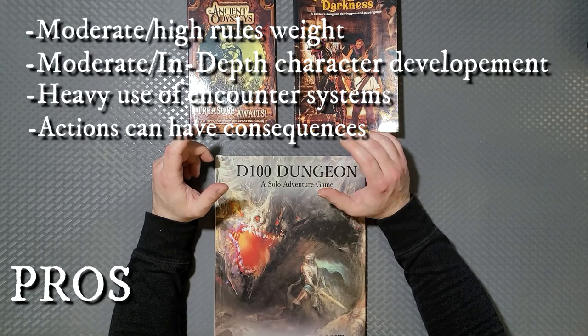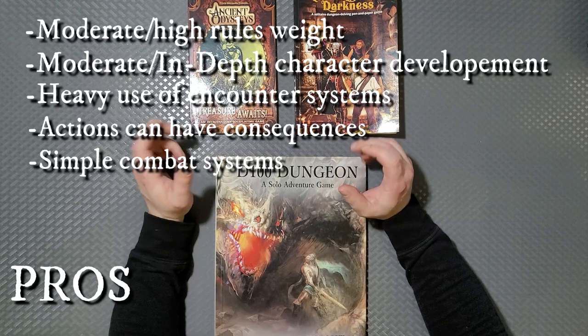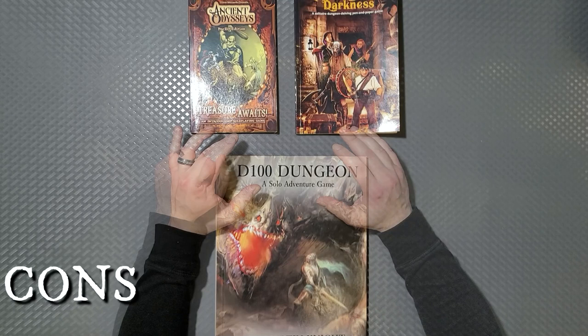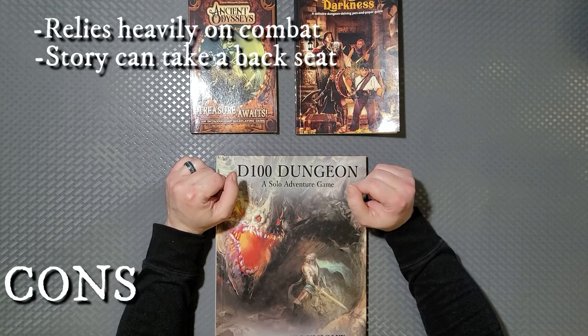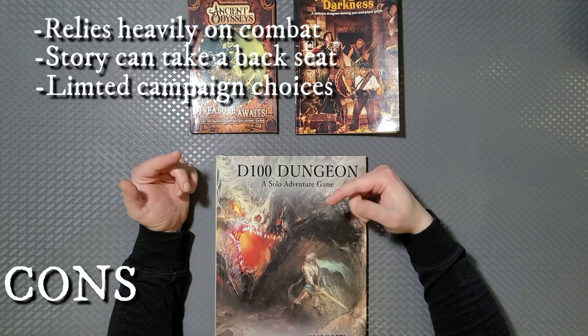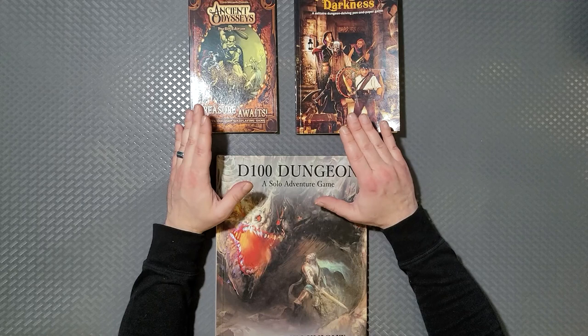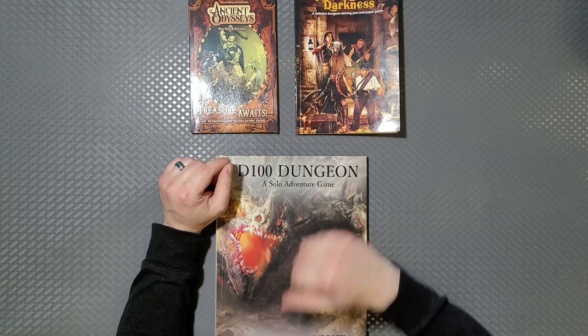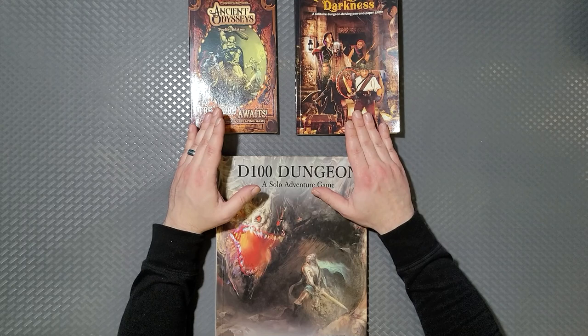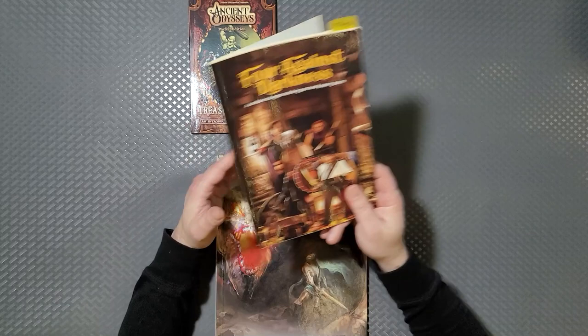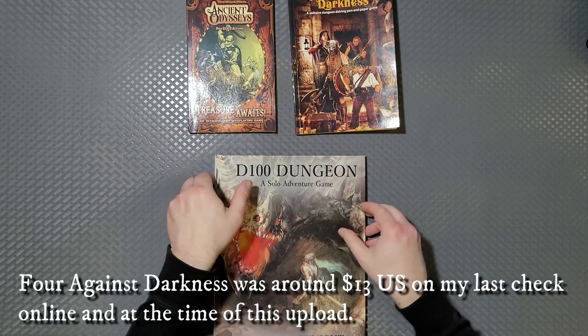Okay. That can also be a con though, because if you want some moving pieces around the board, that's not going to happen with most of these. The cons of these are, they are also typically heavily reliant on combat as a main focus. The story can sometimes take a backseat and there's limited campaign choices compared to once again, a pen and paper RPG. They're just not going to be able to give you the freedom and flexibility of a GM. But they do really good. And I think this is a great middle ground if you just don't want to do those books for the game books or the interactive fiction. Four Against Darkness is probably one of the cheapest entries that you can get into. And a lot of people enjoy that. And with a little bit more complexity, you have D 100 dungeon.